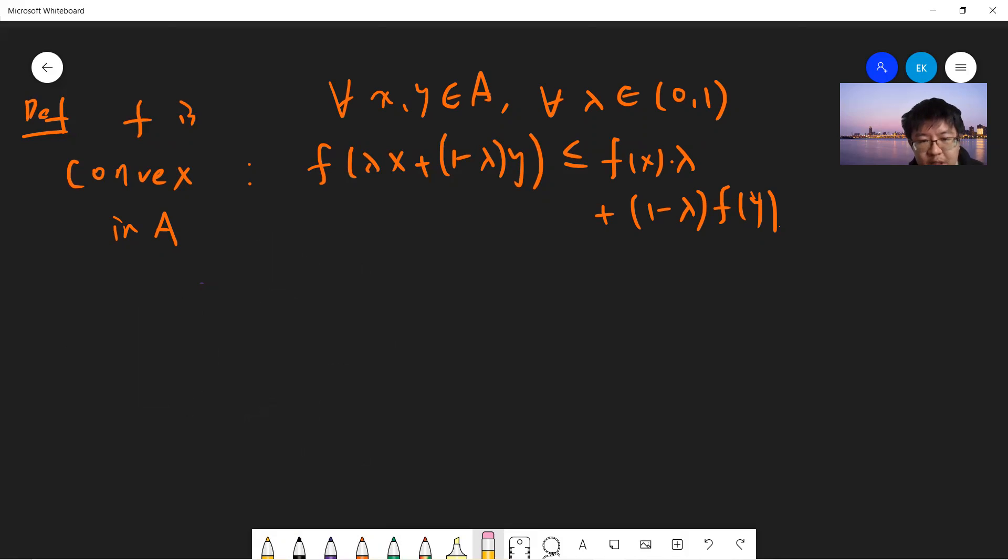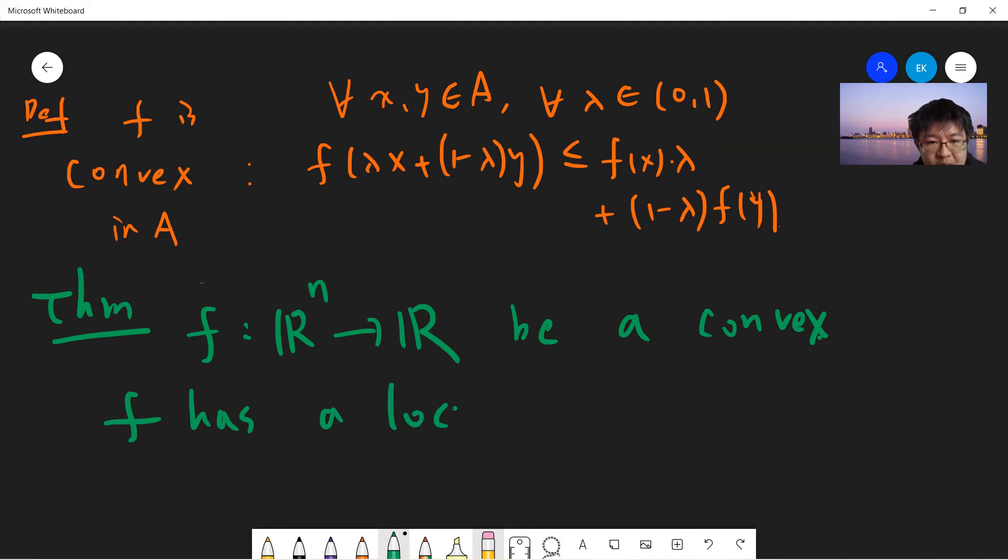So now coming to the important theorem that people like to say, but haven't, so don't tell the proof. So consider f is R^n to R be a convex, and f has a local minimum if and only if f has a global minimum.